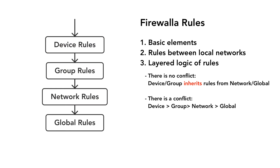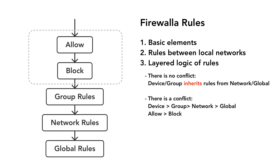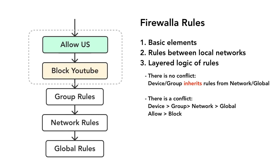If there is a conflict, device or device group rules will take precedence over network rules. Network rules will take precedence over global rules. In addition, allow rules will take precedence over block rules when applied to the same device or network. For example, on a device, if you allow the region US and at the same time block YouTube, the device will still be able to access YouTube because YouTube is based in the US.